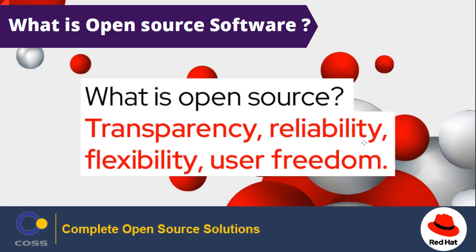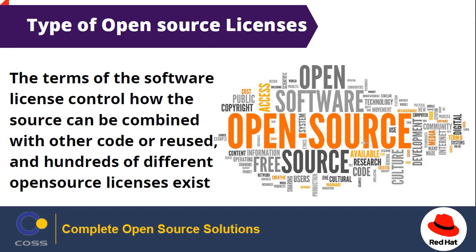Open source promotes collaboration, sharing, transparency, and rapid innovation because it encourages people beyond the original developers to make modifications and improvements to the software and to share it with others. There is more than one way to provide open source software. The terms of the software license control how source code can be combined with other code or reused, and hundreds of different open source licenses exist today. However, to be open source, a license must allow users to freely use, view, change, compile, and distribute the code. There are two broad classes of open source licenses: copyleft and permissive.